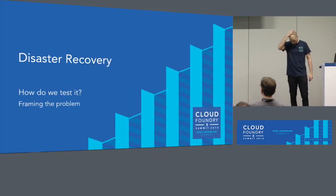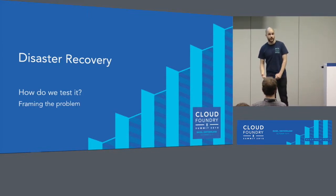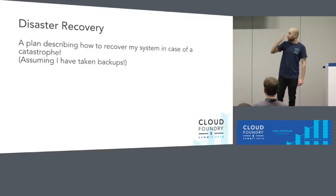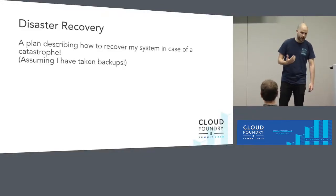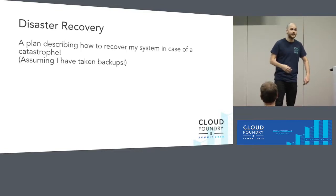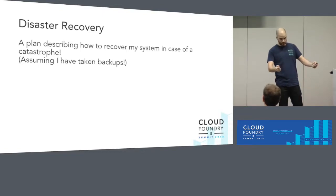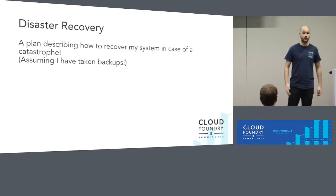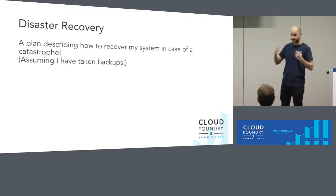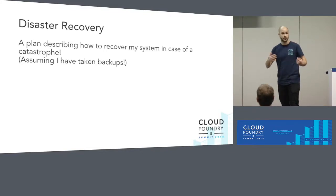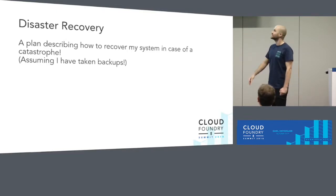Now we're going to talk about disaster recovery and what it means and how we test it — framing the problem. What is disaster recovery? It is actually a plan on how you recover in case of a disaster. Imagine you have a system running in production, something goes wrong, you freak out and say, I'm going to have to bring back my production system. What do I do? These exact steps are your disaster recovery strategy. Assuming you take backups, you can recover.